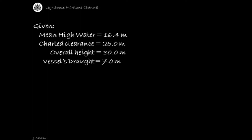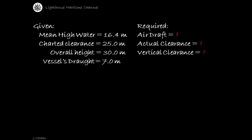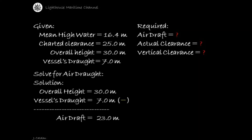Given: mean high water = 16.4 meters, charted clearance = 25.0 meters, overall height = 30.0 meters, vessel's draft = 7.0 meters. The result is the air draft, which is equal to 23.0 meters.